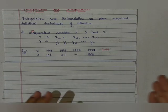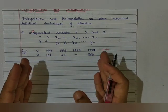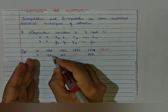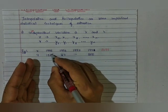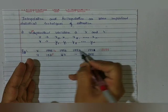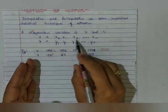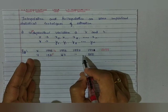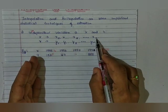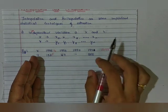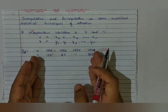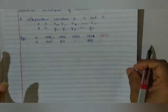Another example: if you have to calculate the value outside the range — say for 1999 — it is called extrapolation. So, if any value to be found is between x0 and xn, it is interpolation; and if you have to calculate outside the given range, it is extrapolation.